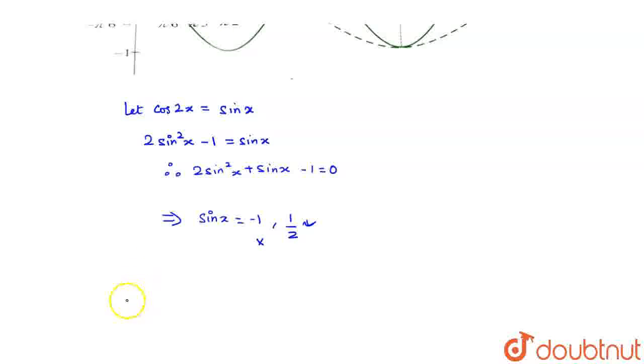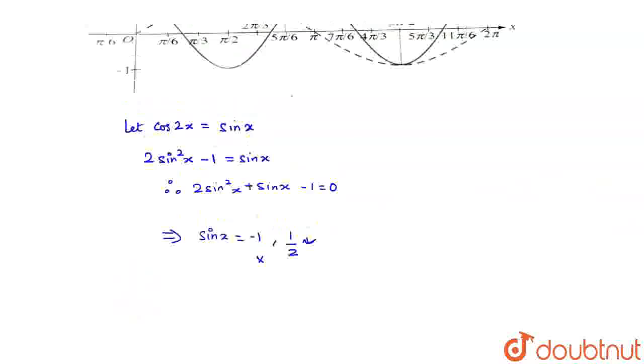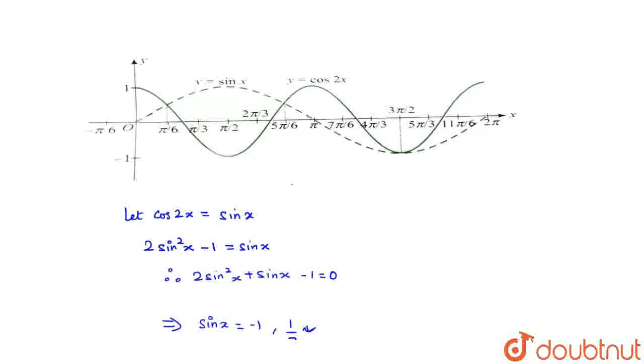If we check the graph again, we can see that y equals cos 2x intersects at pi by 6.